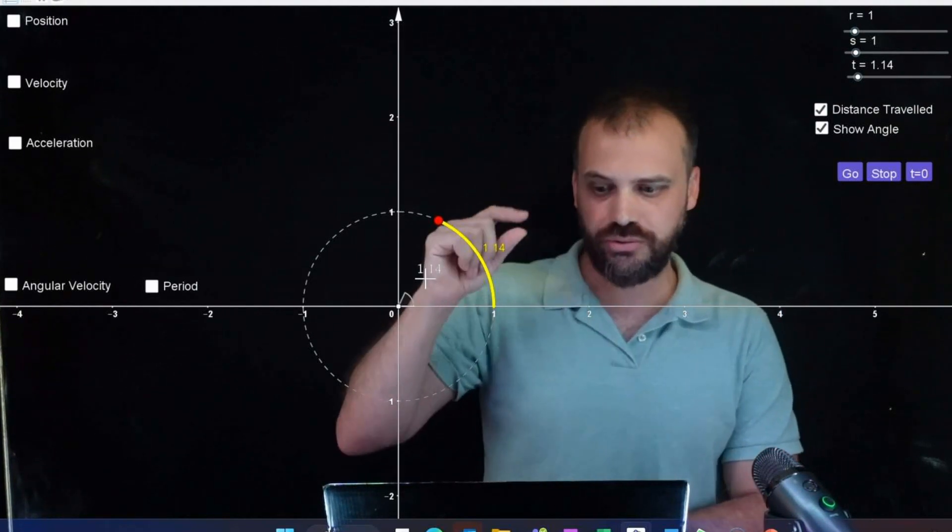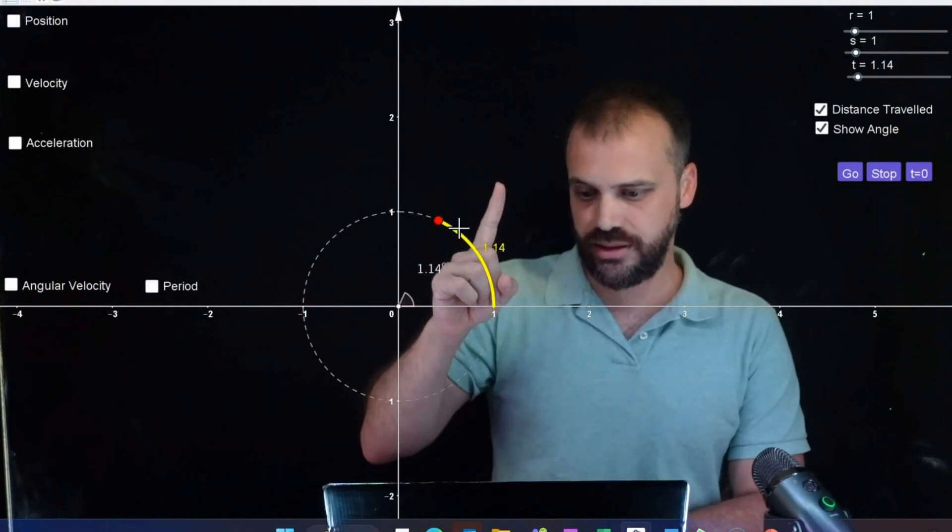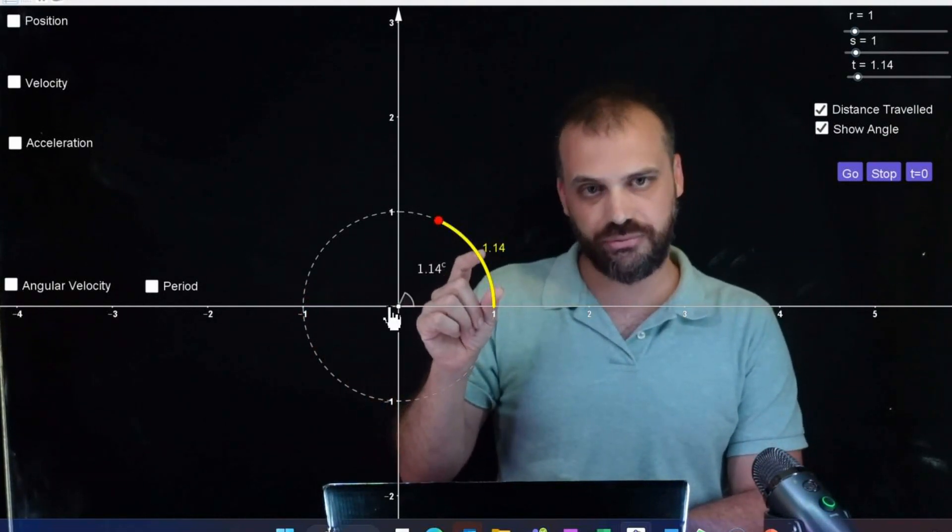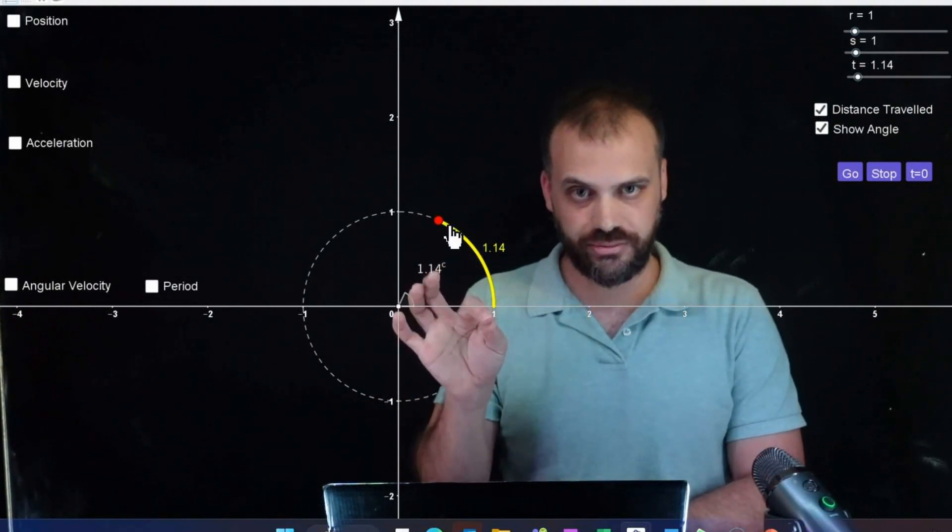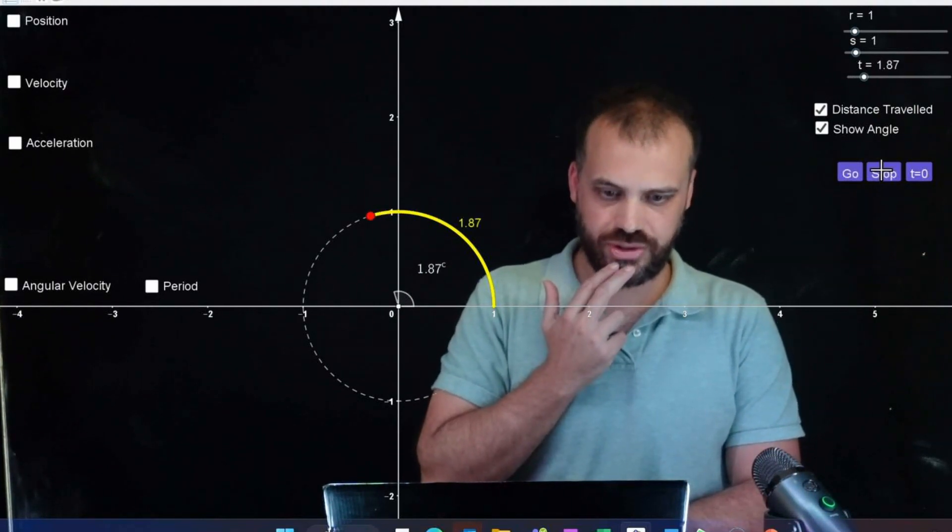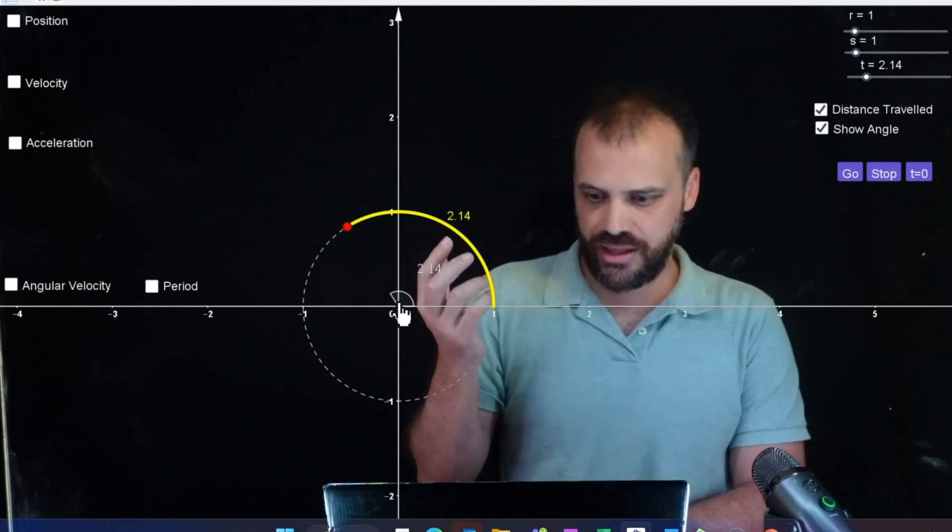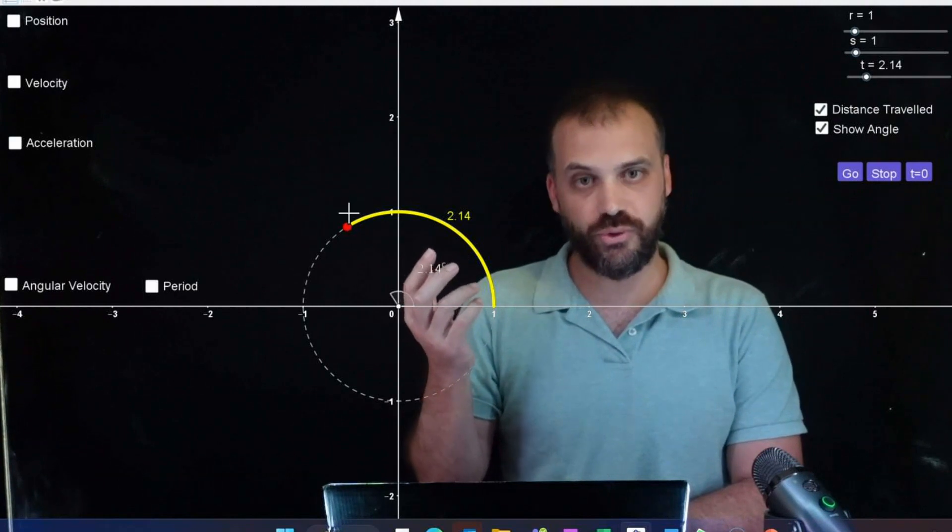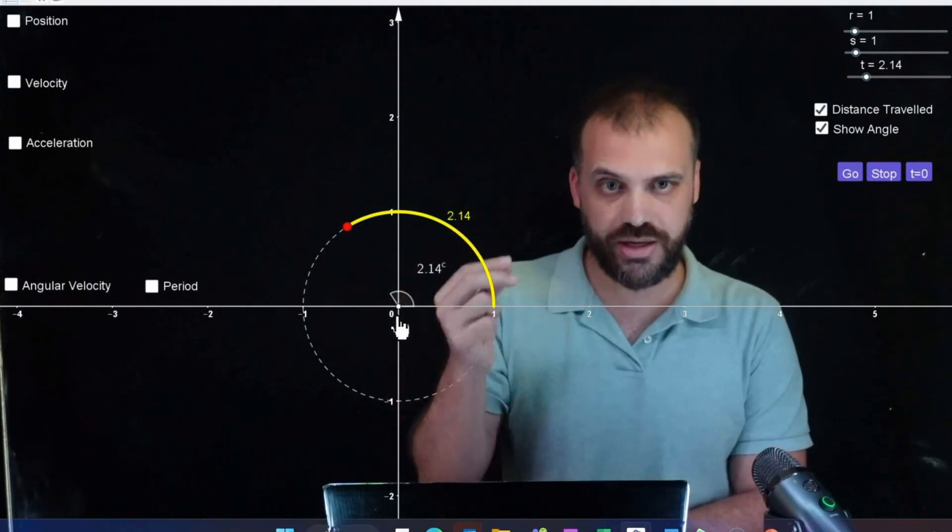Because you should remember that 1 radian is equal to the length of the radius of the circle around the arc, right? That's 1 radian. If we go a bit further, go and stop, and go and stop, you can see we've gone 2.14 meters. That is equal to 2.14 times the radius. So that's 2.14 radians.